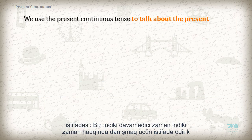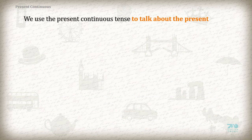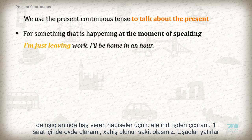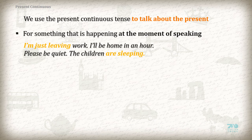Uses of the Present Continuous Tense. We use the Present Continuous to talk about the present — for something that is happening at the moment of speaking. For example: 'I am just leaving work. I will be home in an hour.' 'Please be quiet. The children are sleeping.'